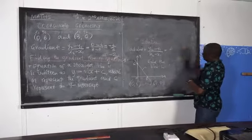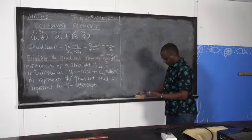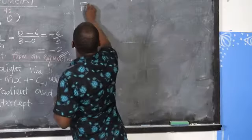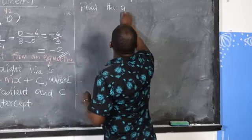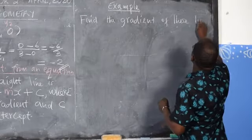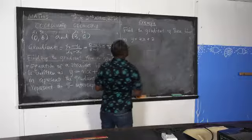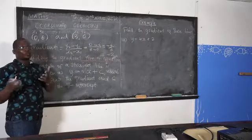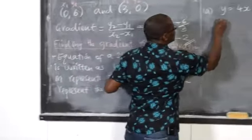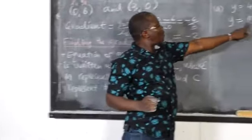So we are going to look at the following examples of how we use that equation to find the gradient of a line. The question would be: find the gradient of these lines. The first line would be y equals to 4x plus 2. That is the equation of a line. What you need to do is just compare this equation with the general form of equation: y equals to Mx plus C, where M represents the gradient.